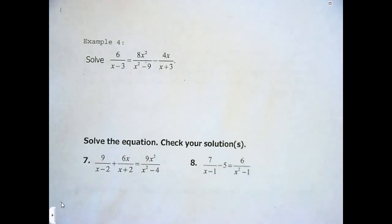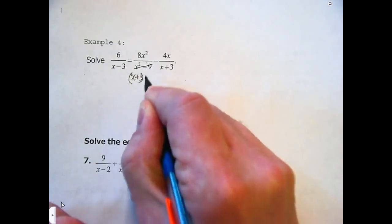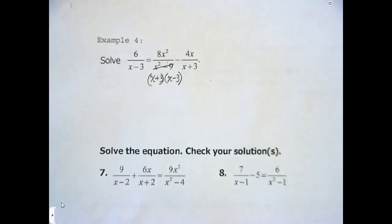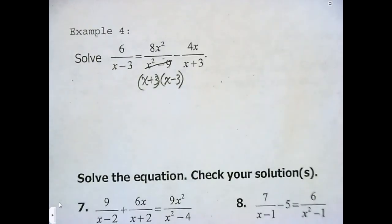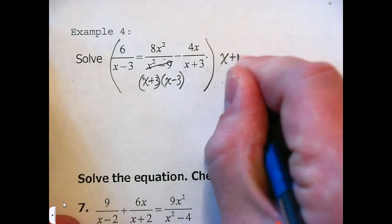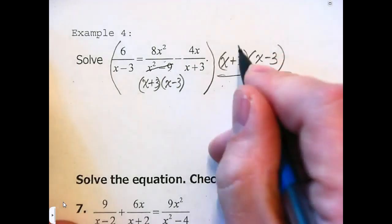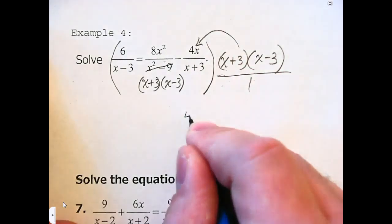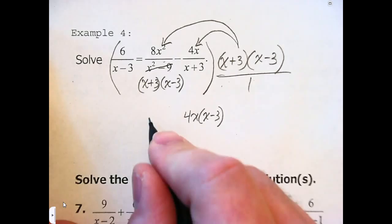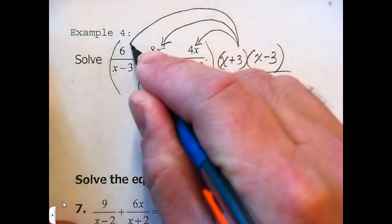One last problem — Example 4. There are some practice problems if you'd like, but let's do Example 4. Tell your neighbor how this one is different from the others we've done. There is one new step involved. What is it? You can factor the denominator. Well done, Faith.